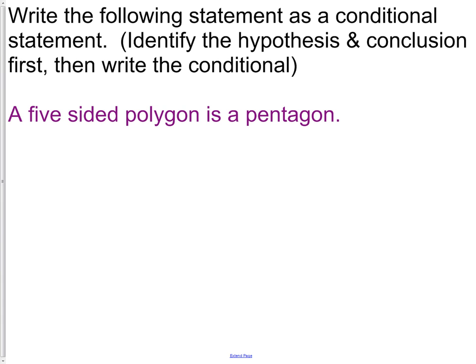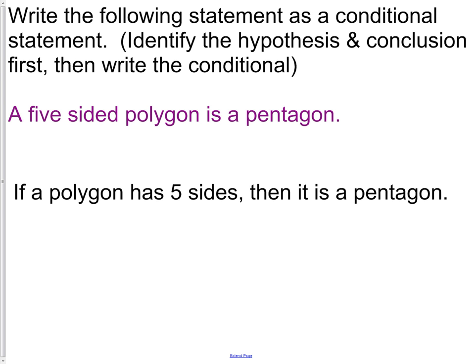Write the following statement as a conditional statement, then identify the hypothesis and conclusion, and finally write the conditional. Here's our conditional statement: If a polygon has five sides, then it is a pentagon. Our hypothesis is a polygon having five sides. Our conclusion is then it is a pentagon.